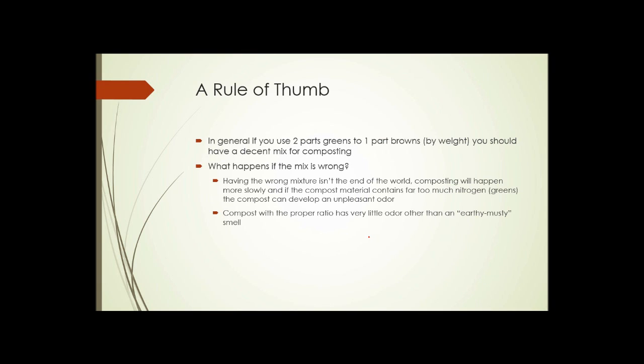As a rule of thumb, if you use two to three parts by volume of greens to one part brown, you should have a decent mix for composting. But what happens if it's wrong? It's not the end of the world. Composting is still going to happen, just much more slowly. If the compost material contains far too much nitrogen, you can get an unpleasant odor developing. Having the ratio right keeps the odor almost nonexistent and makes this process happen much more quickly.